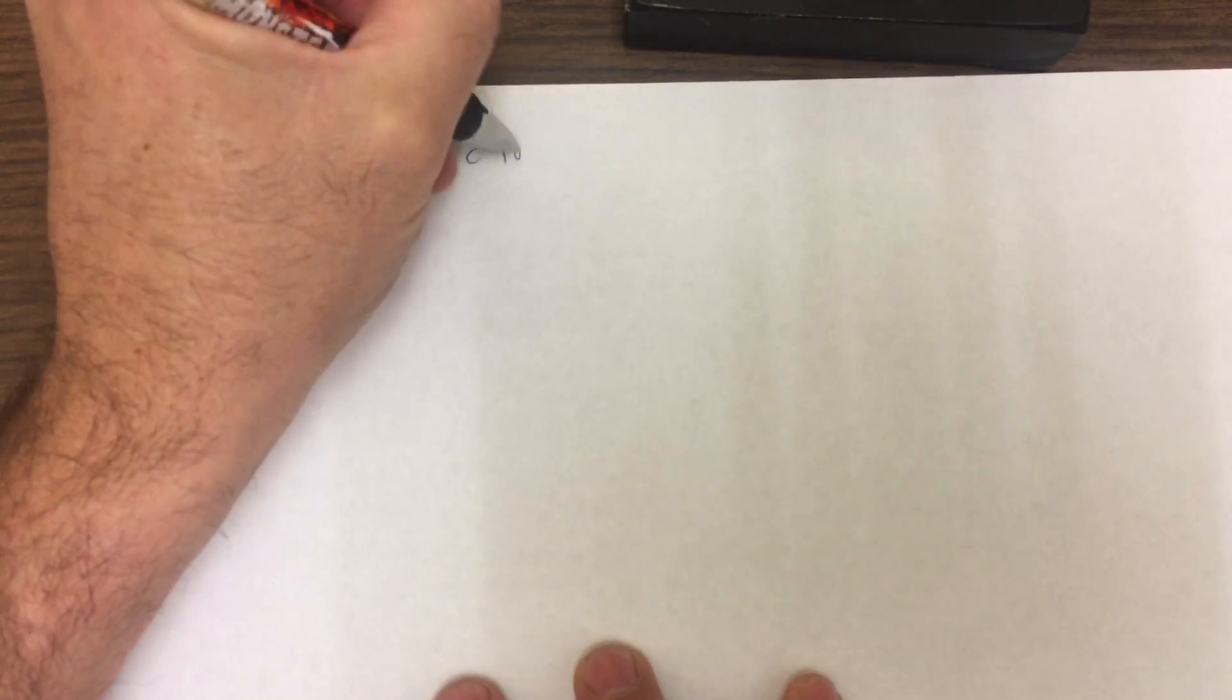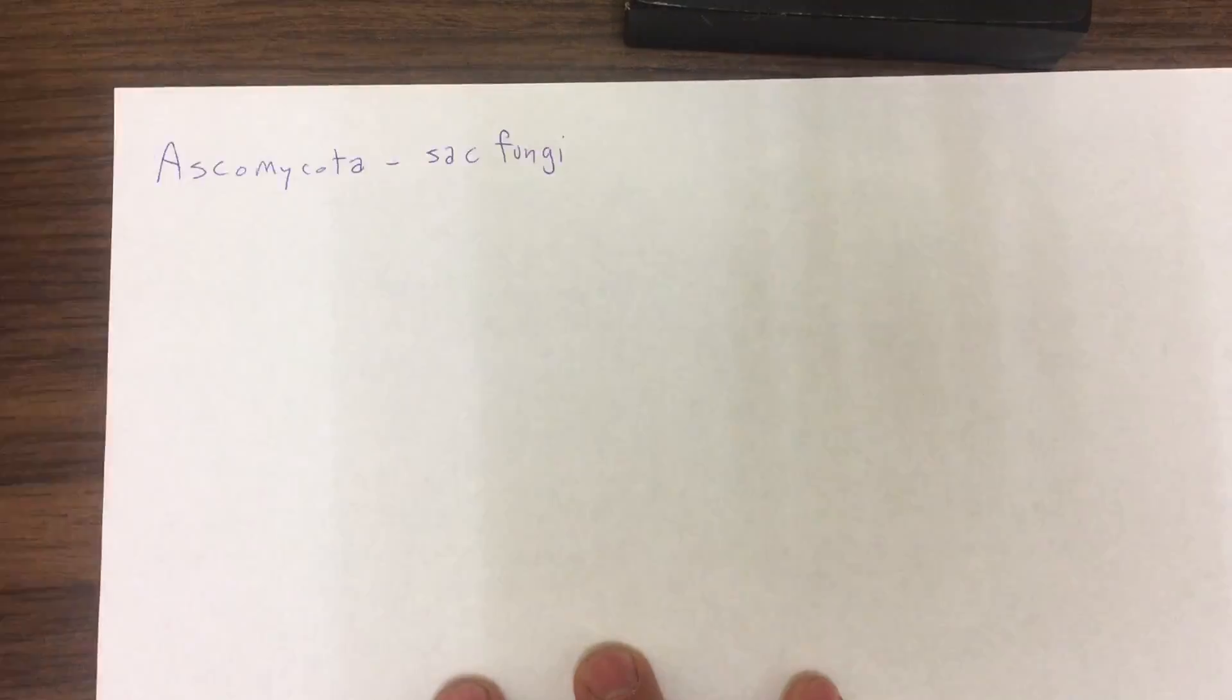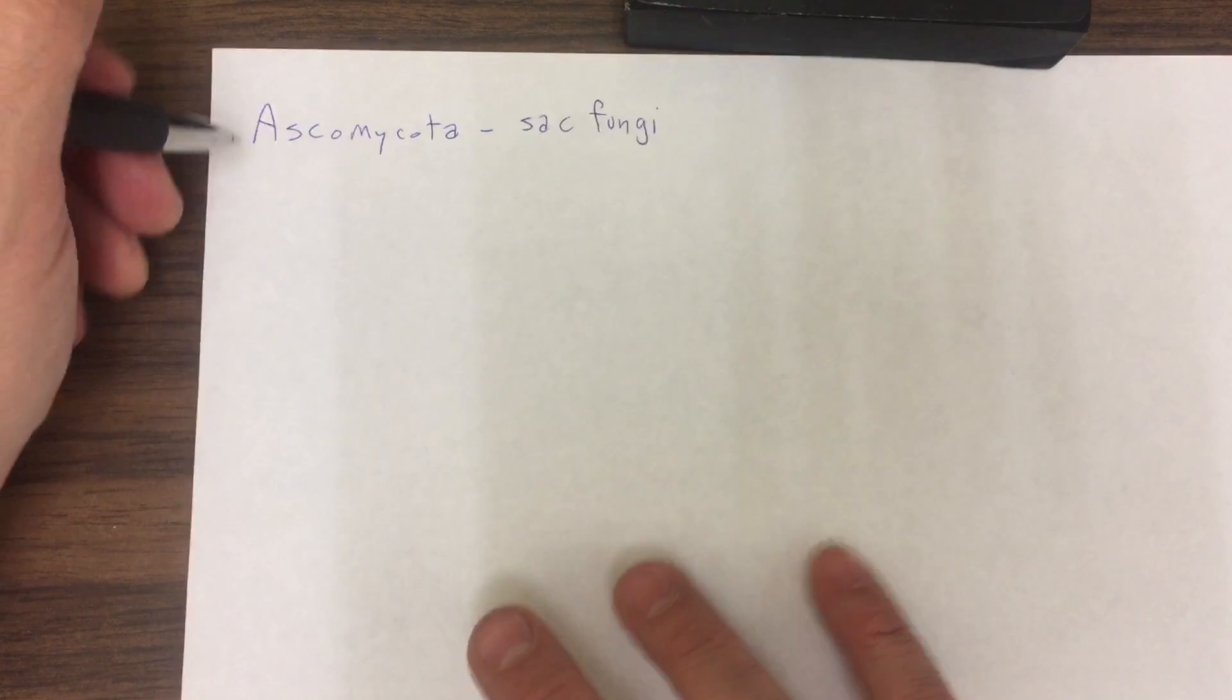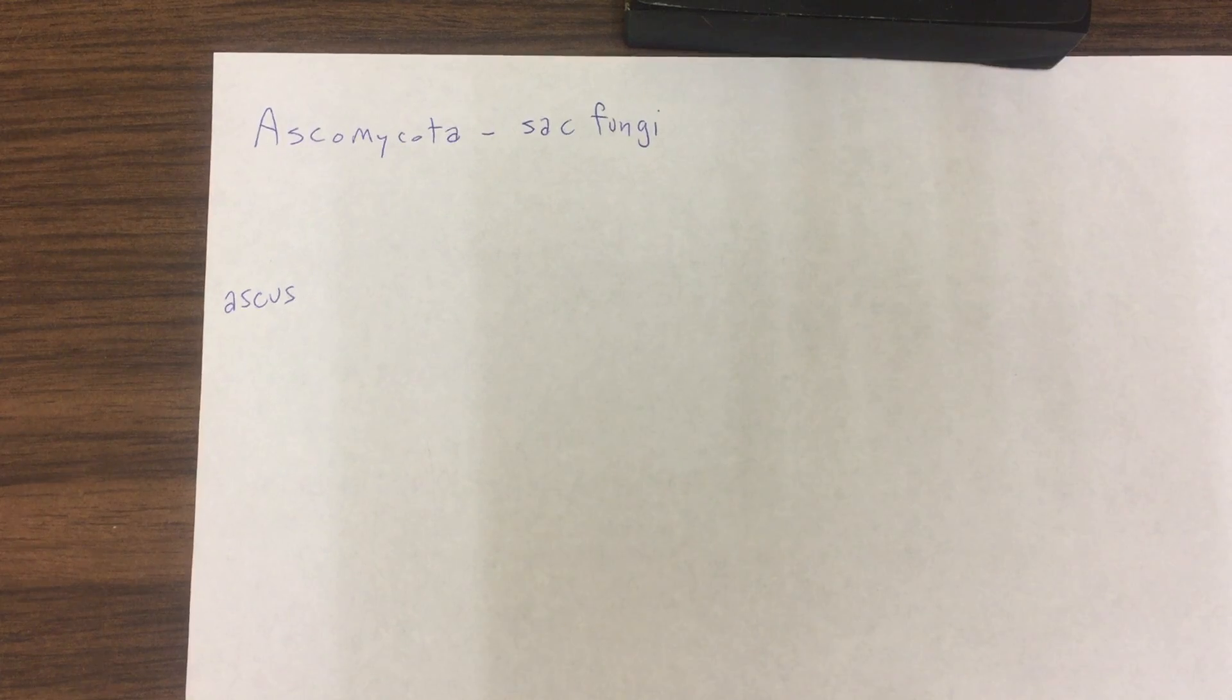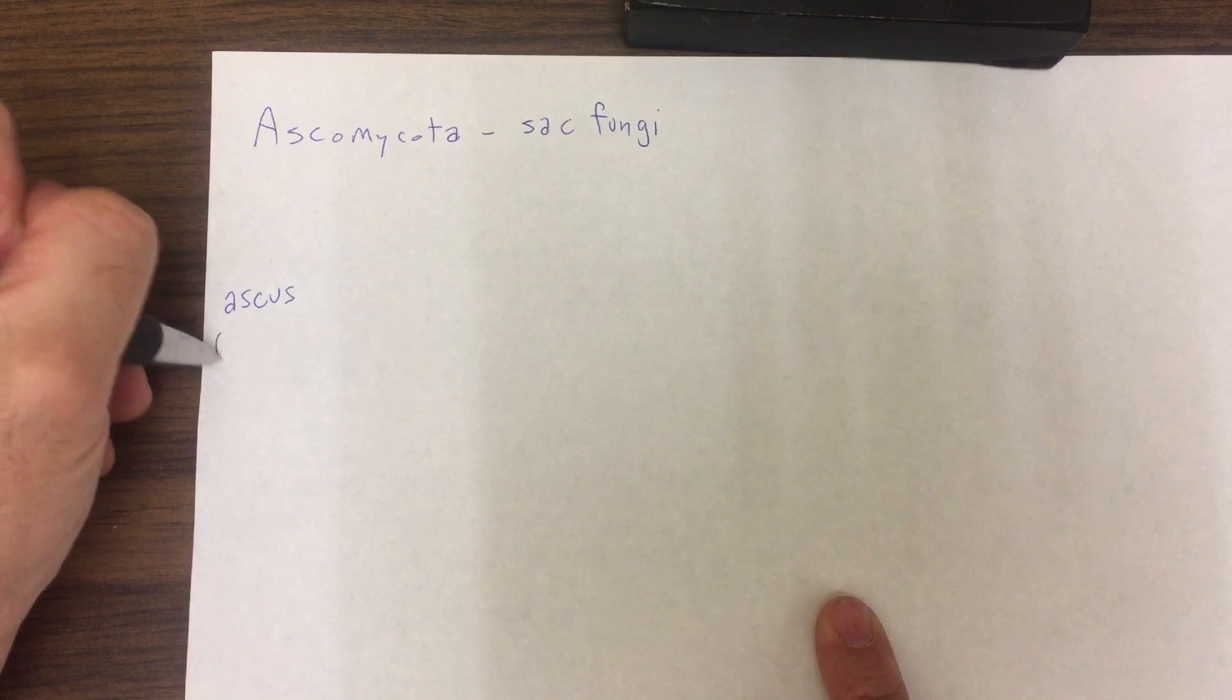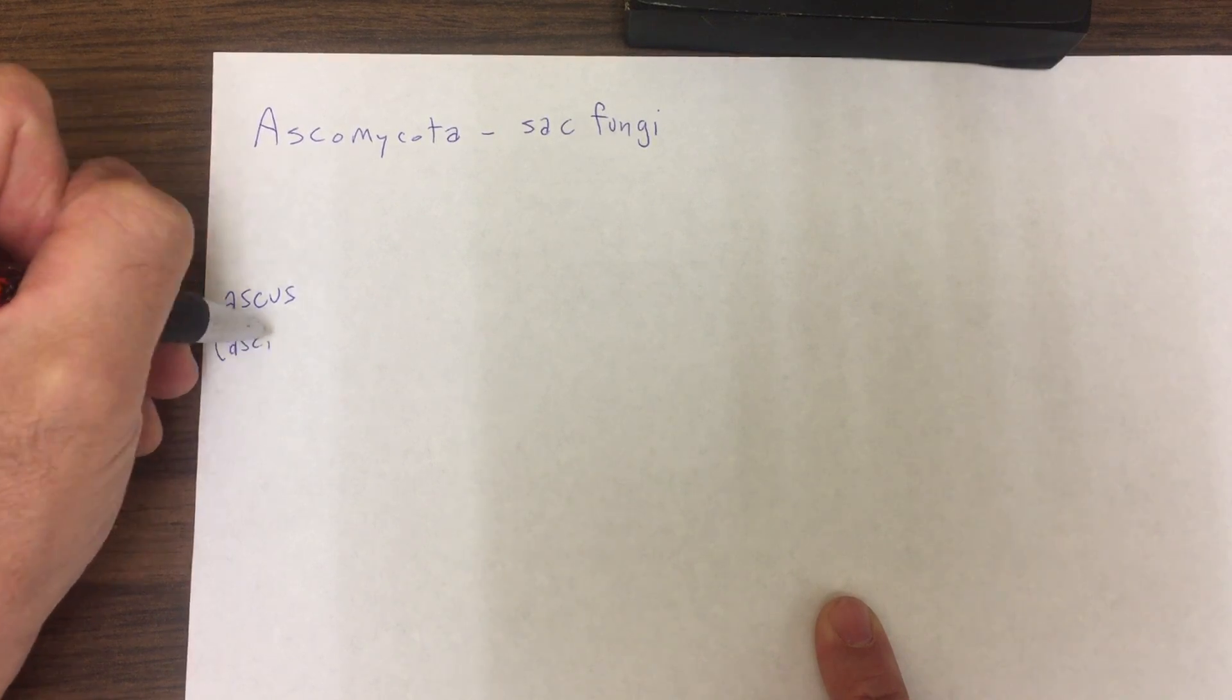The biggest phylum of fungi is the ascomycota. And the ascomycota are your sac fungi, so-called because the microscopic structure that produces the spores is called an ascus, which means sac. And if we have multiple asci, that's what we call them in the plural.